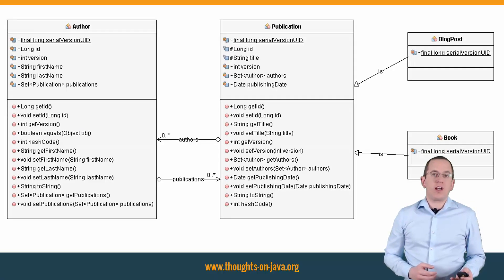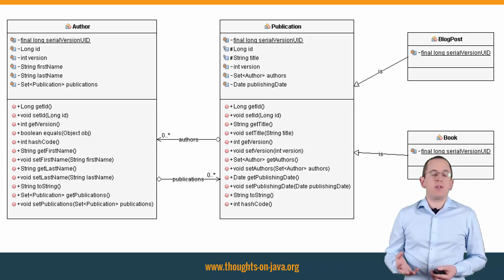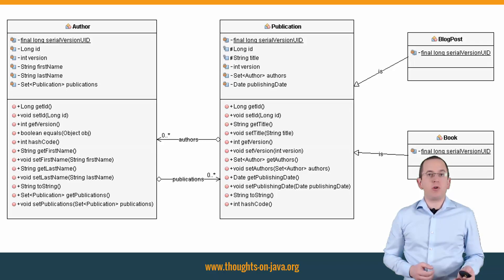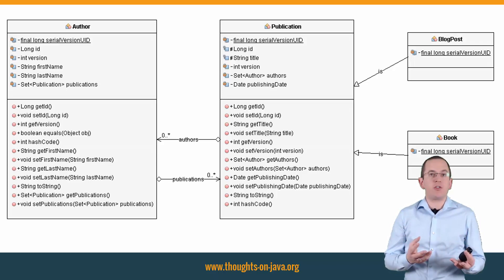You can, for example, create an entity model with authors who have written different kinds of publications like books and blog posts. It's pretty obvious that publication is the superclass of book and blog post, and that you have to model a relationship between author and publication.